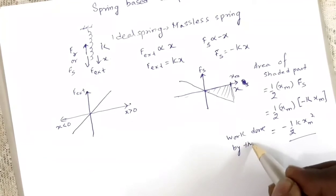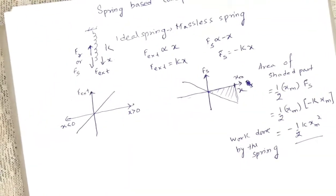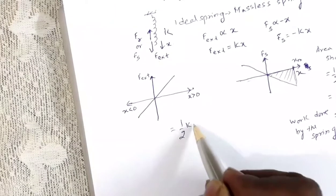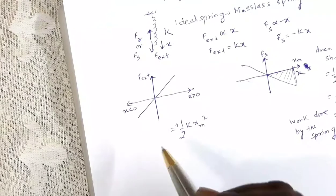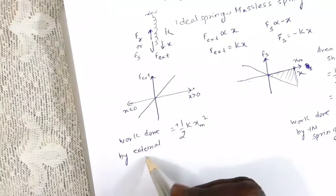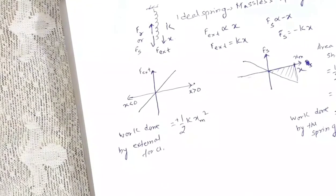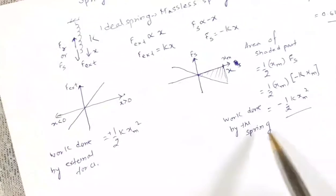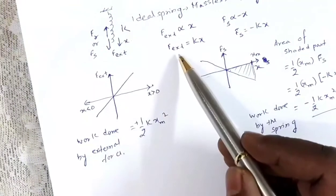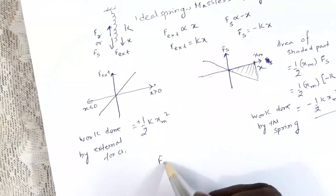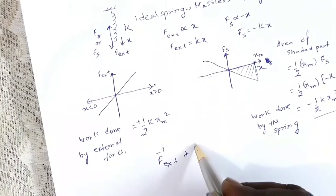If we calculate the area for the external force graph, we get +½·k·xm², which is the work done by the external force. So the total work done is zero: work done by external force plus work done by spring force equals zero. This makes sense because F_external + F_spring = kx + (-kx) = 0.